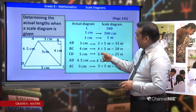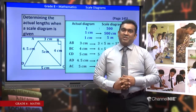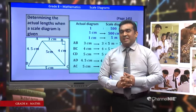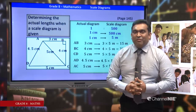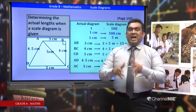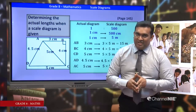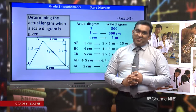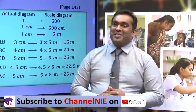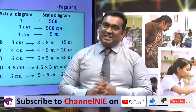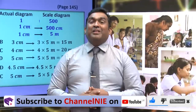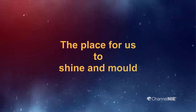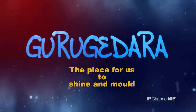We discussed scale diagrams. A diagram drawn on a scale is called a scale diagram. There are three ways of expressing a scale: as a description, as a ratio, and as a relation. Ratio concepts are very important when solving problems based on scale diagrams. Today we discussed a very important lesson. Next day I hope to see you with a new lesson. Goodbye to all.